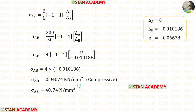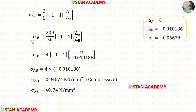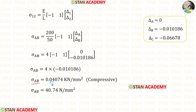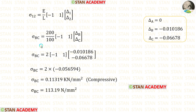Now we find the stresses using the stress formula. For bar AB: Young's modulus is 200 and the length is 50. The displacement at AA is 0, and we apply the computed delta B. Multiplying the matrices and then multiplying by 4 gives sigma AB as a negative value, indicating compressive stress. Removing the kilo prefix and multiplying by 1000, we finally get sigma AB equal to 40.74 N per mm square (compressive).